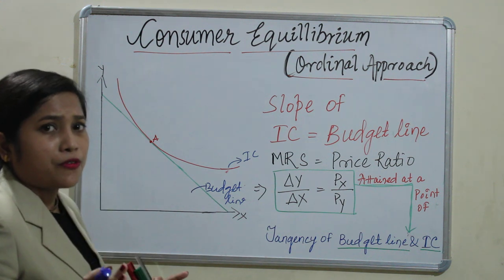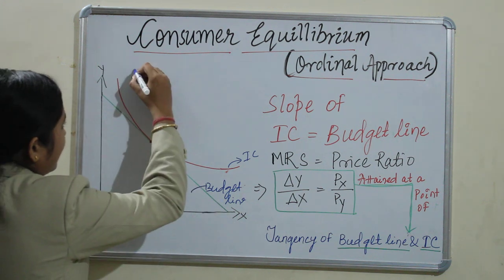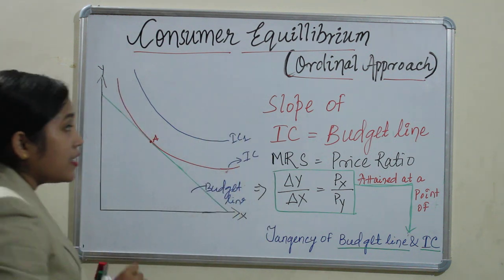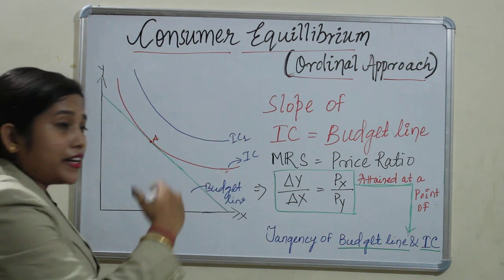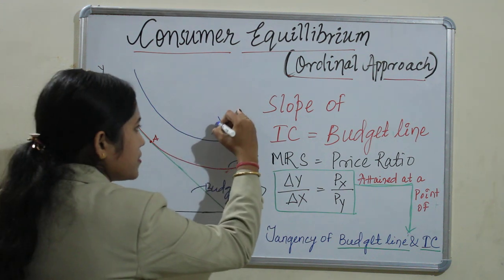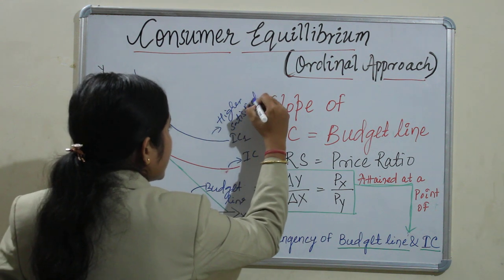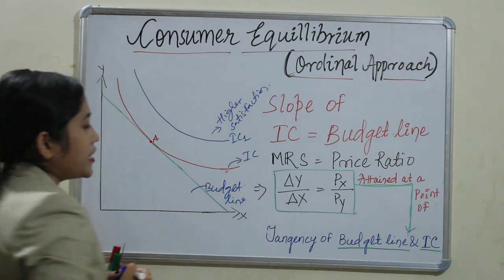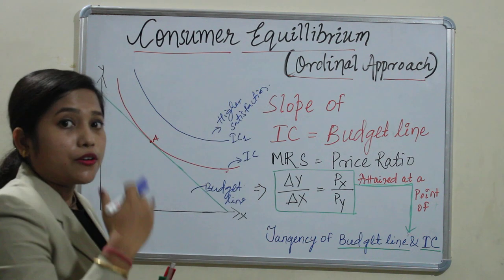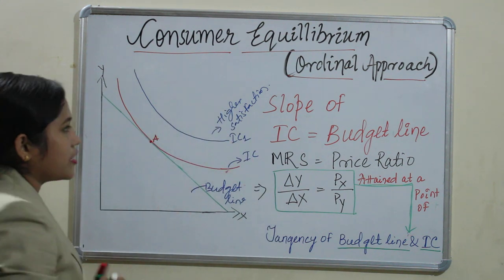How will we confirm that it is the equilibrium point? For that purpose, we have taken another indifference curve — this is IC1 — an indifference curve to the right of the original one. That means it represents higher satisfaction, because we have covered that as the indifference curve moves to the right, it provides more and more satisfaction. That means it is a higher satisfaction curve.